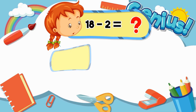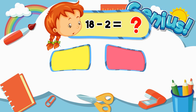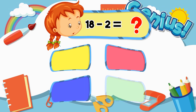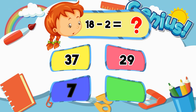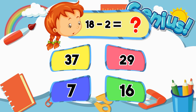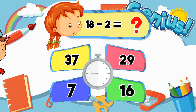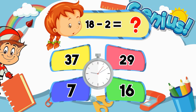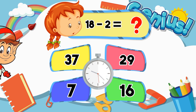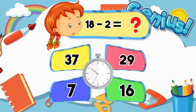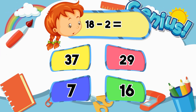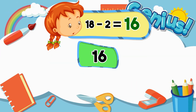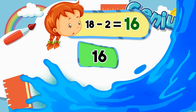What is 18 minus 2? Thirty-seven. Twenty-nine. Sixteen. Correct answer: 16.